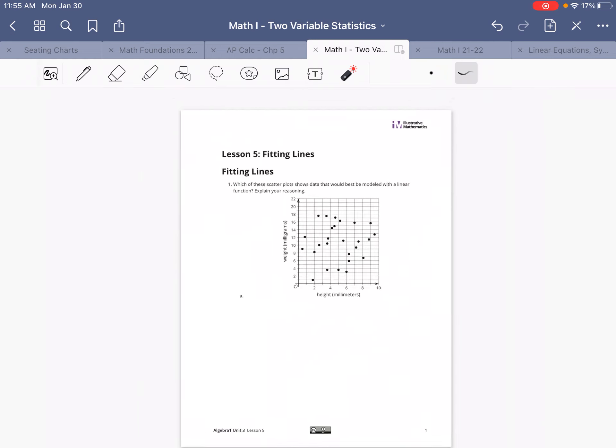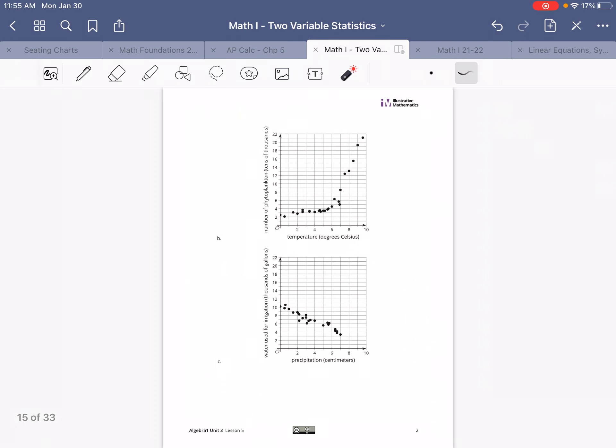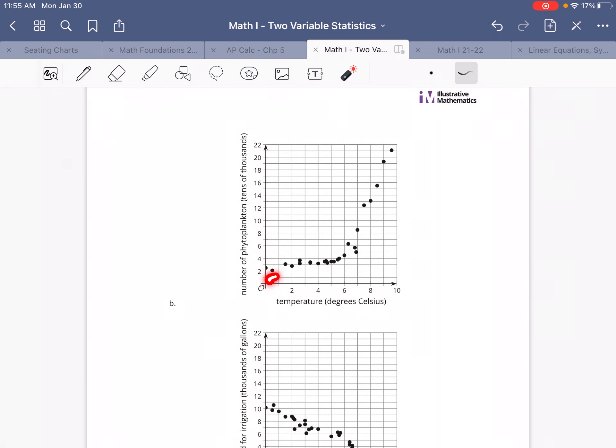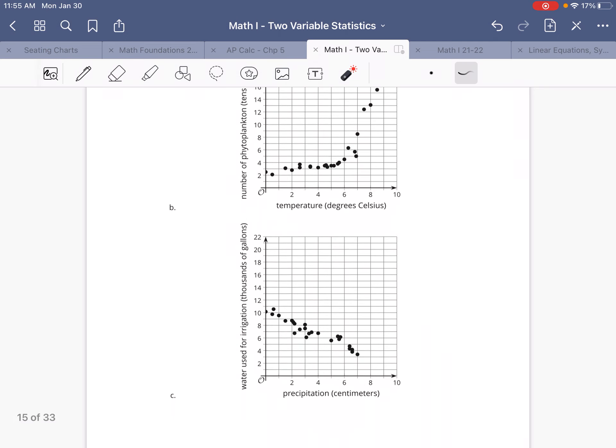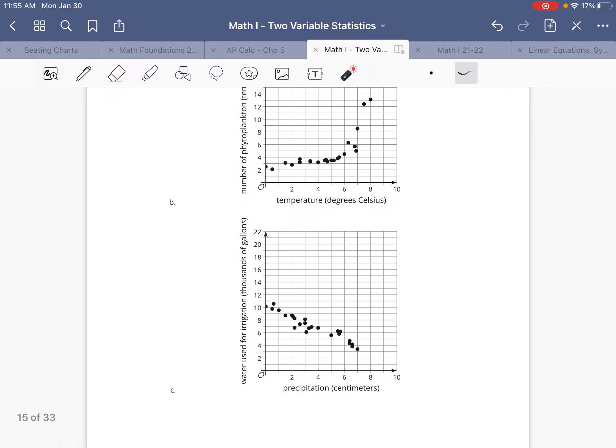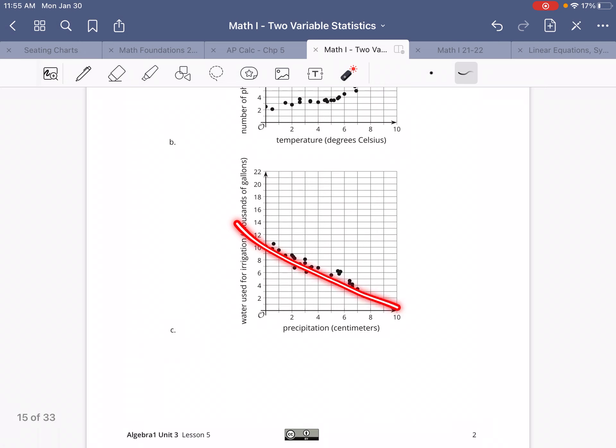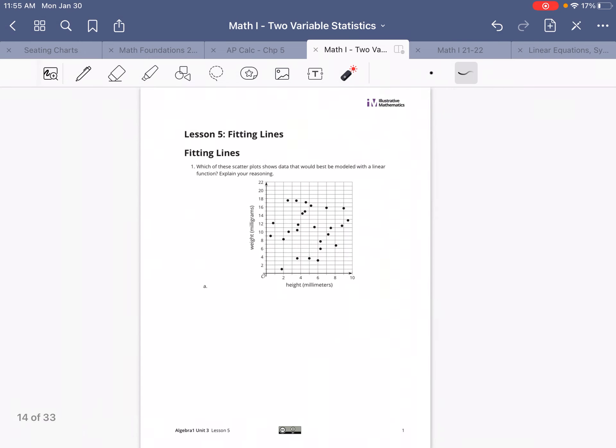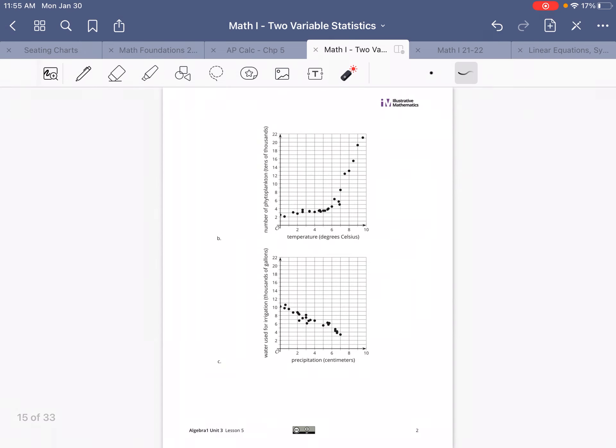So there's option A. Option B, let's see, can I draw a straight line through? Well, I don't know. It looks like there's a trend here, but that's not a linear trend, I don't think. Okay, so option C. Which of those three is best fit by a straight line? That's the question that's being asked.